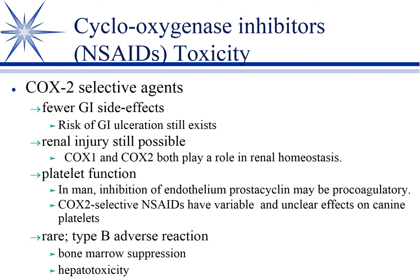Renal injury is still possible with COX-2 selectives. It turns out COX-1 is not the only cyclooxygenase involved in renal prostaglandin production — COX-2 still produces some prostaglandins involved in renal function, so you can still have renal injury. How it compares to non-selectives is unknown, but we still worry about it.